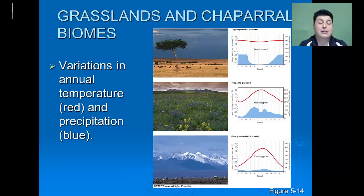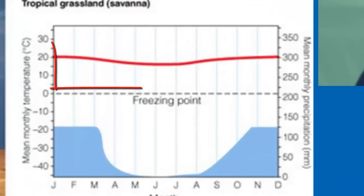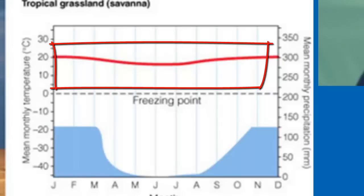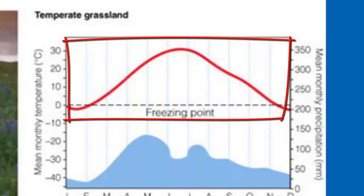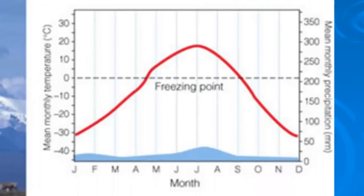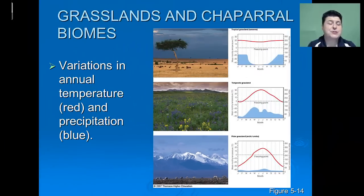When we examine our climatograms for our grasslands, we see that precipitation is very seasonal. The tropical grassland, or savanna, is going to have consistently warm temperatures. Our temperate grasslands, or prairies, are going to have seasonal temperatures. The polar grassland, also known as the Arctic tundra, is going to be seasonal, but it is only above freezing for a few months out of the year. As a result, the polar grassland's precipitation is usually in the form of snow.